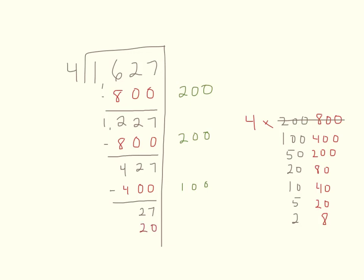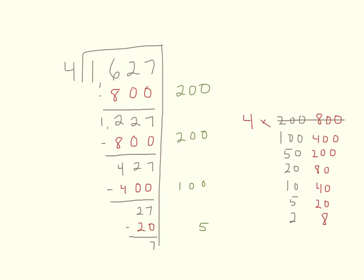I come down and find 20 on the chart, and my partial quotient for that is 5. I subtract and I'm left with 7. Running out of space, I come back to the chart — 8 is too big, but my divisor still fits, so I put 4 here. On the right side the partial quotient is 1, and 7 minus 4 is 3. Since 4 is bigger than 3, I'm done dividing, and 3 is my remainder.